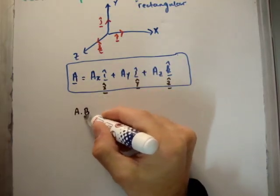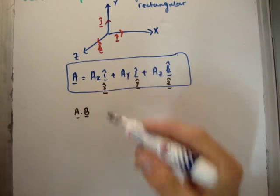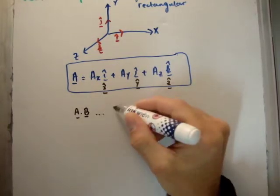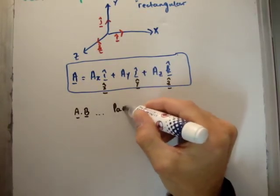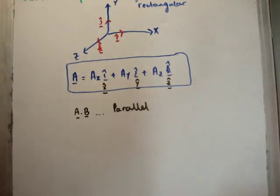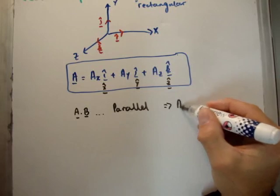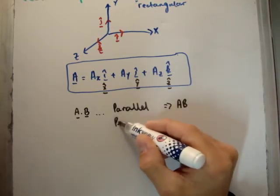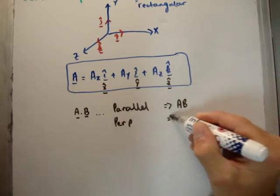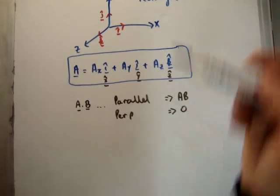What that works out is how parallel they are. If they're parallel, the answer is just going to be equal to AB. And if they're perpendicular, the answer is zero.